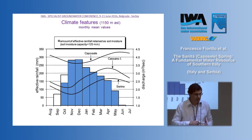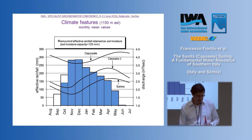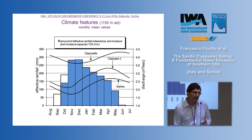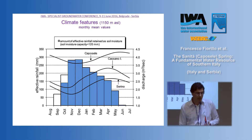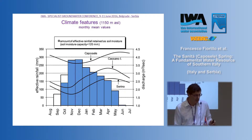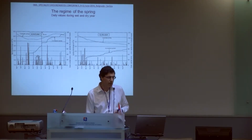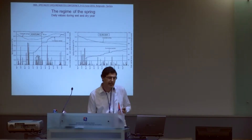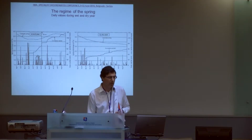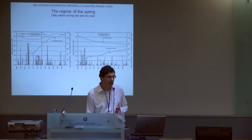This is a distribution of the effective rainfall in this area, where we can see that the peak of the rainfall occurs when the spring discharge reaches its minimum value. In particular, the Caposele spring has almost the opposite regime with respect to the rainfall distribution. During a wet year, the shape of the hydrograph is characterized by a flood during spring or summer time, and a minimum occurring during autumn, with almost no sharp peak typical of a karst spring.